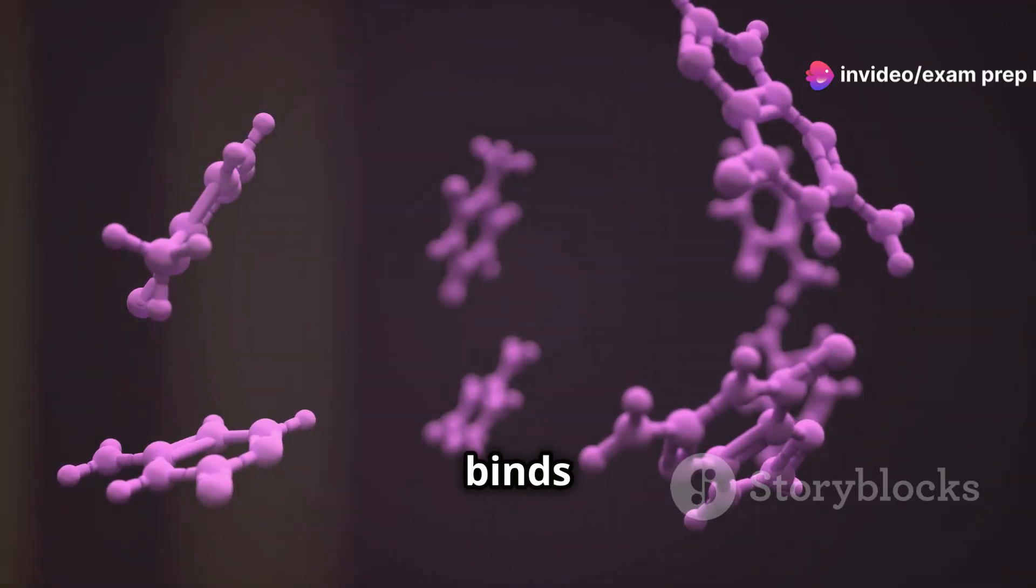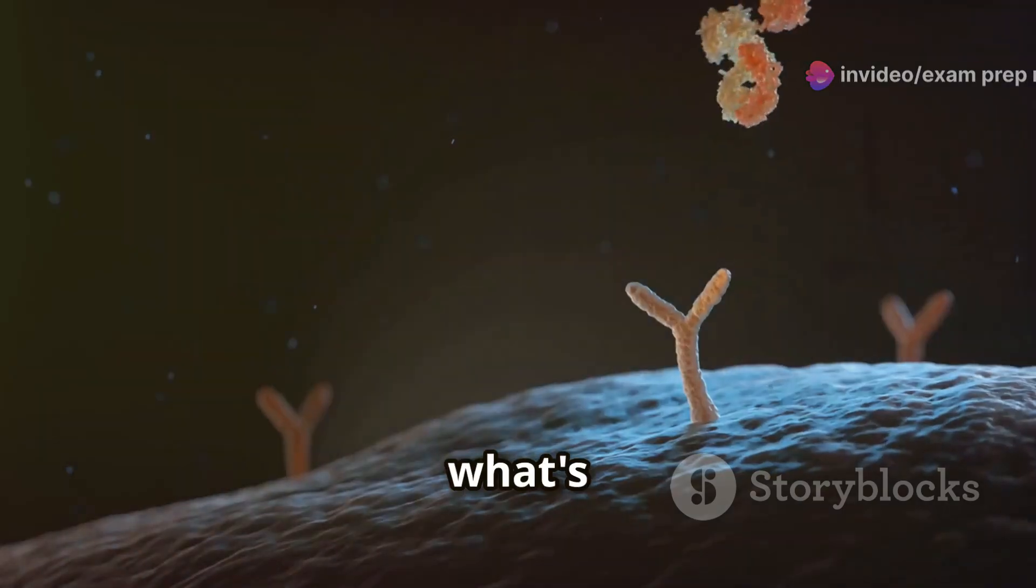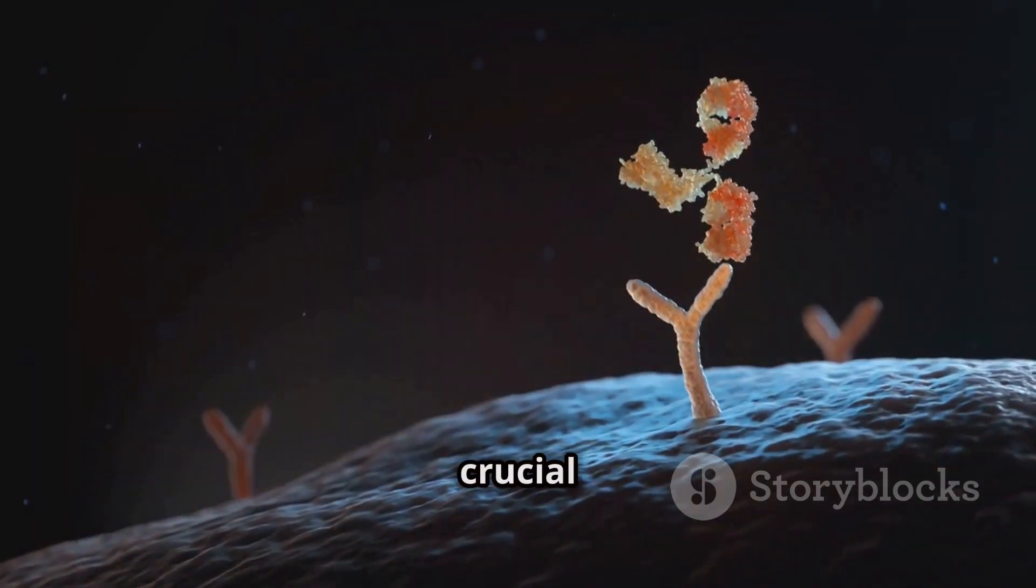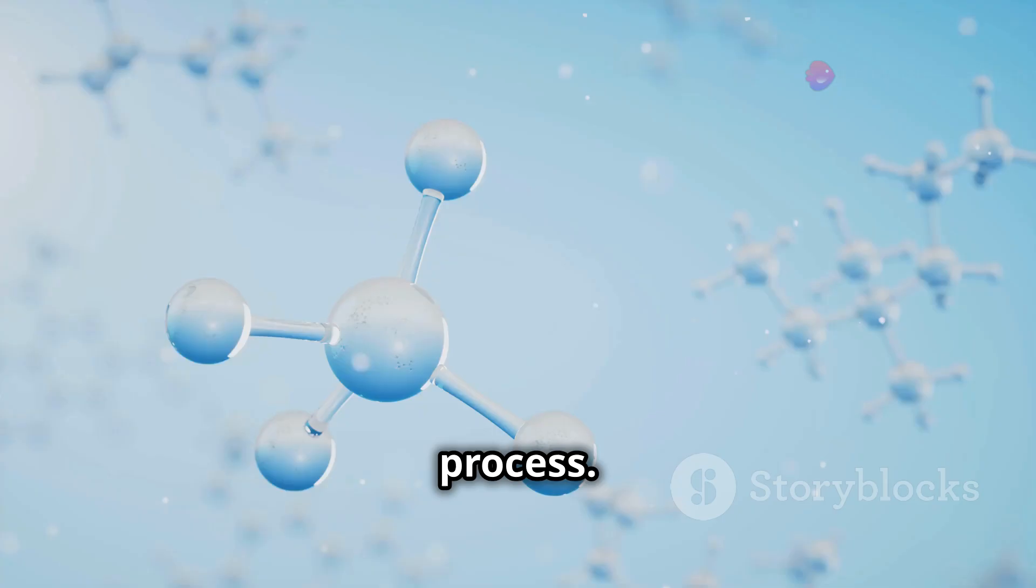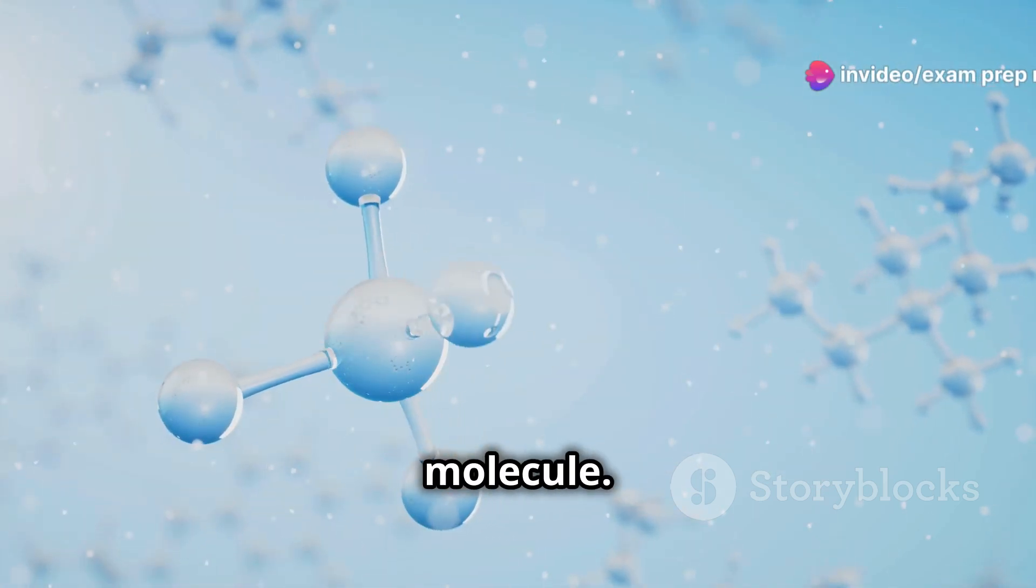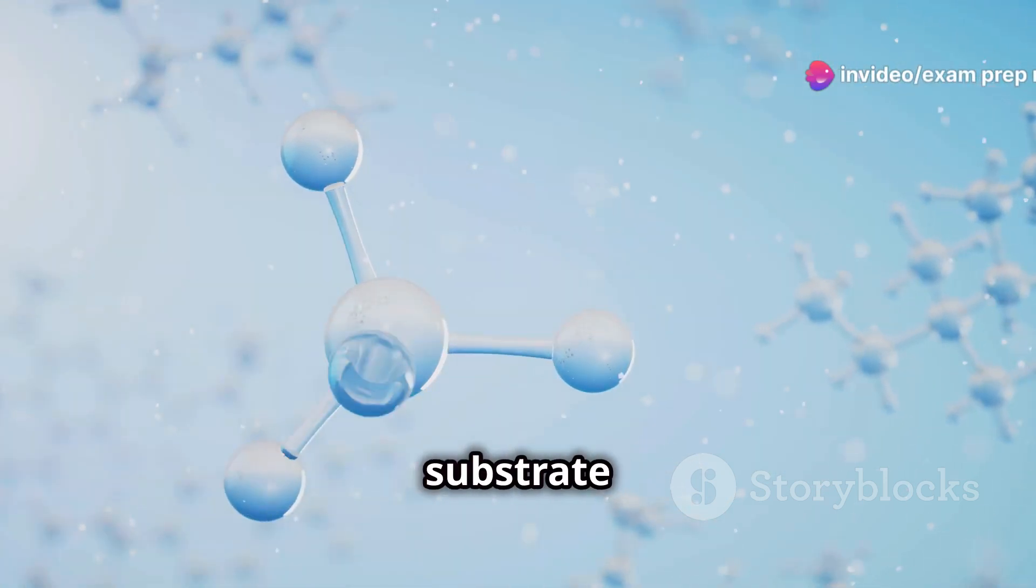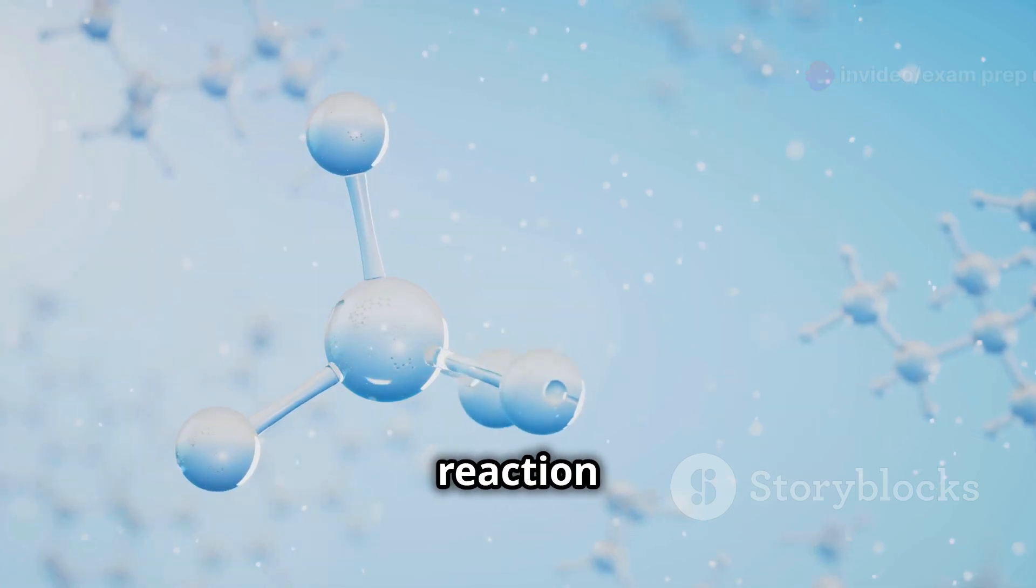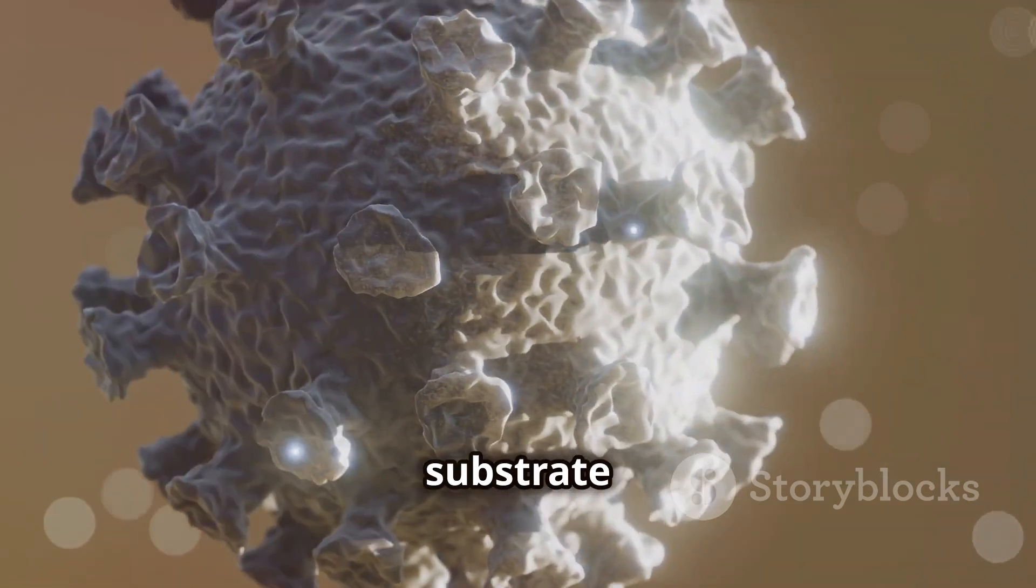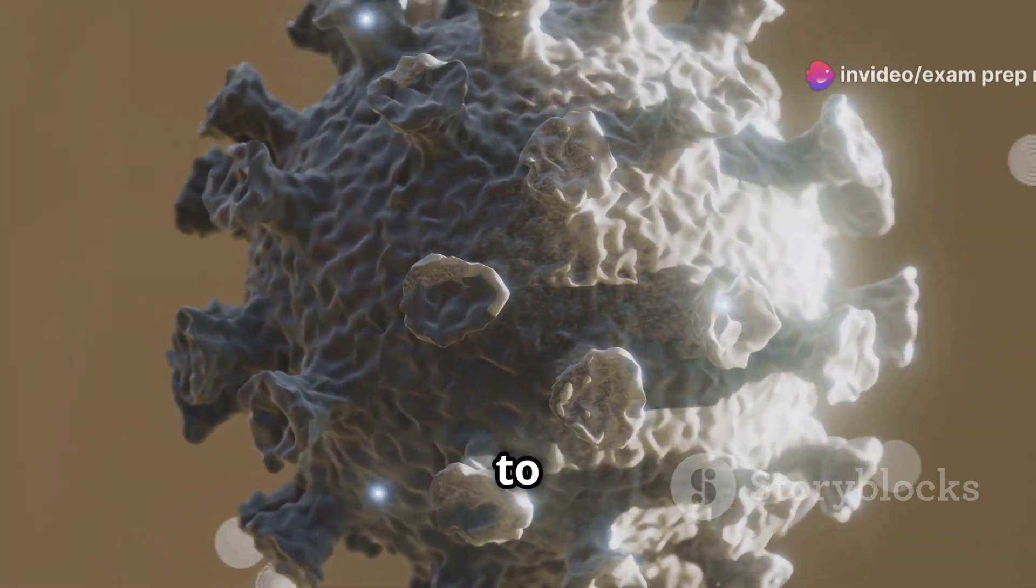When the substrate binds to the active site, it forms what's called an enzyme-substrate complex. This complex is a temporary but crucial step in the reaction process. Think of it as a temporary hug between the enzyme and its target molecule. This hug brings the substrate into the perfect position for the reaction to occur.